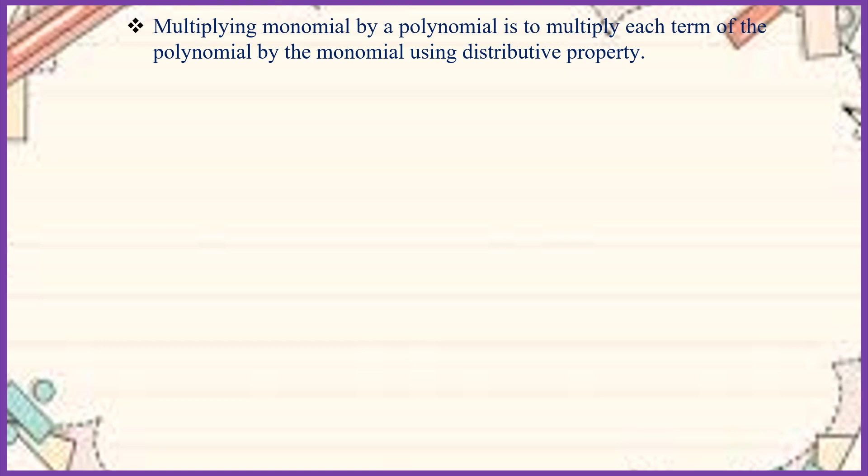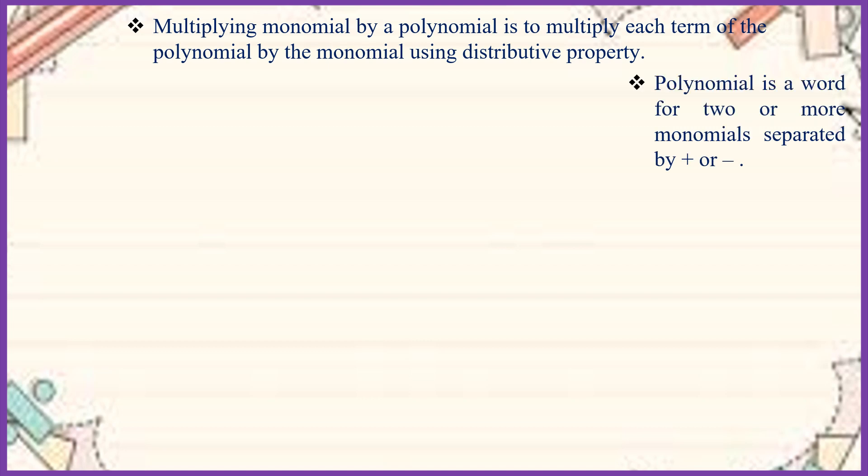Please remember that when multiplying a monomial by a polynomial, multiply each term of the polynomial by the monomial using the distributive property. A polynomial is a word for two or more monomials separated by a plus or minus sign.